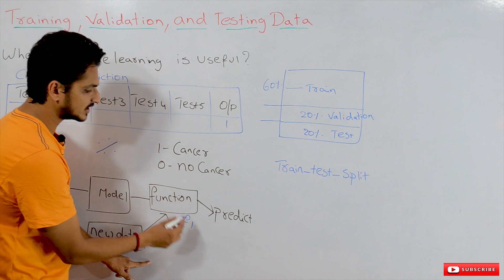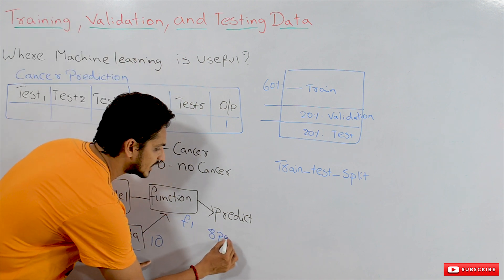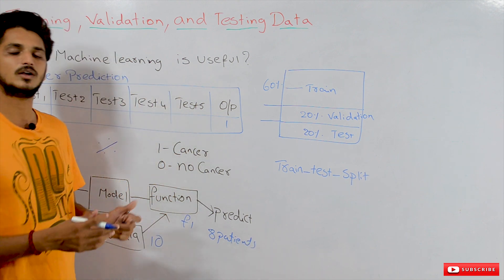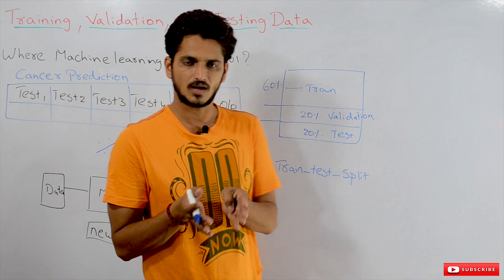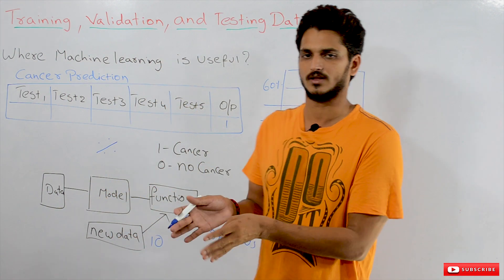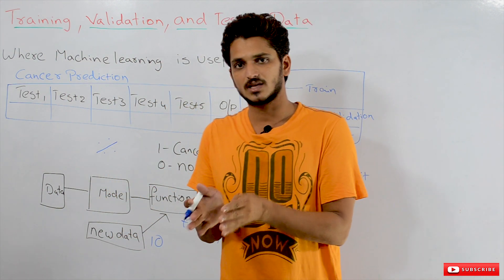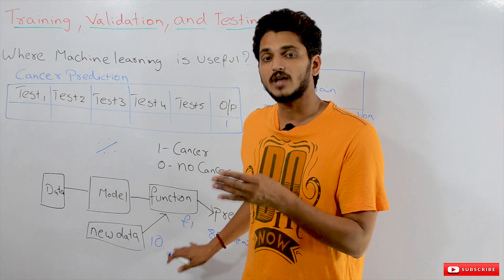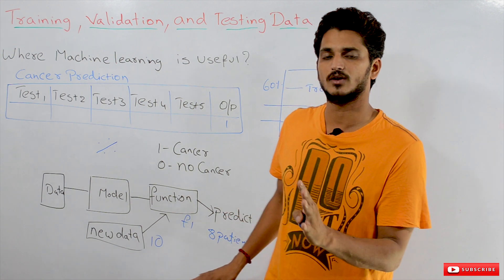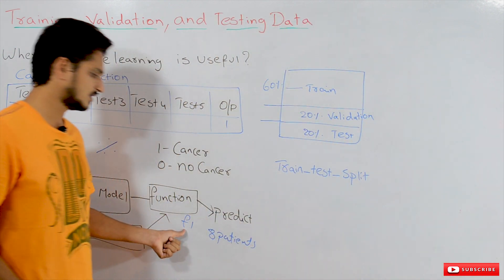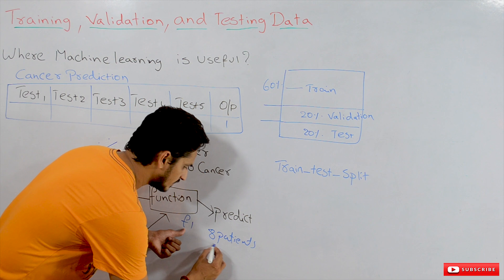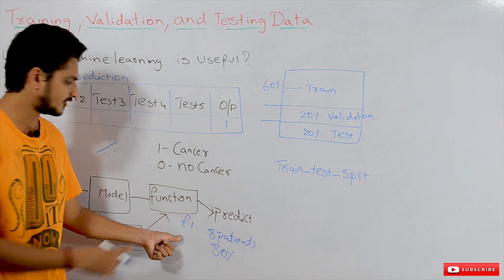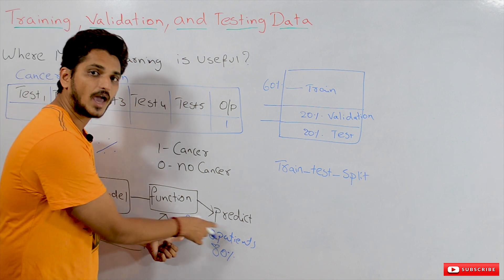Assume that this function has predicted 8 patients' data accurately. Accurately means: if a patient is having cancer, our function will also predict cancer; if a patient is not having cancer, our function predicts not having cancer. Out of 10, it predicted correctly for 8 patients. What's the accuracy of this function? 80 percent. So 80 percent of the time our function will predict accurate values.